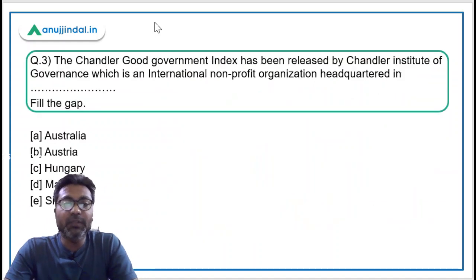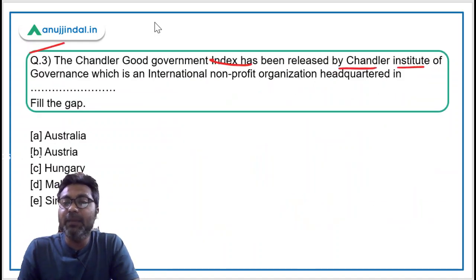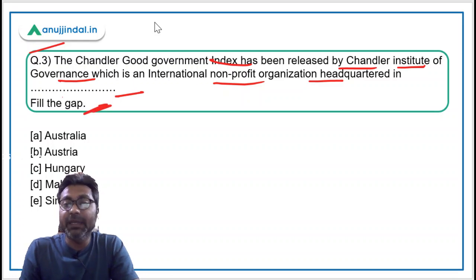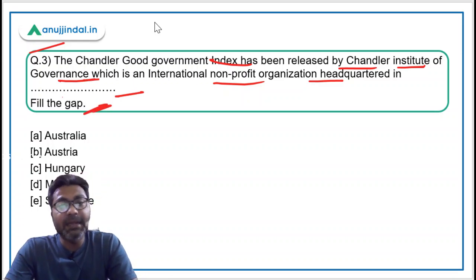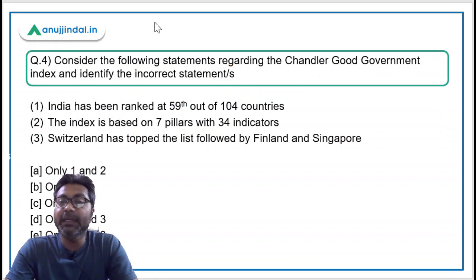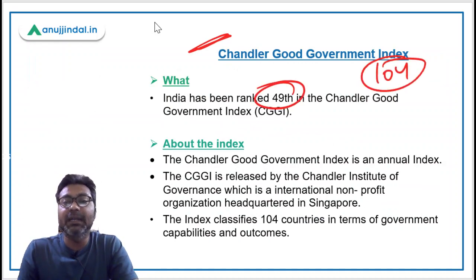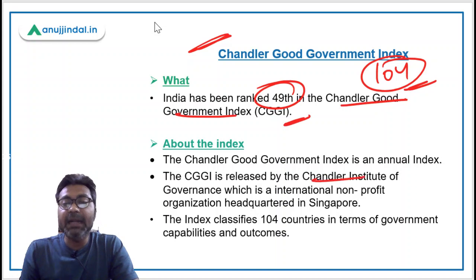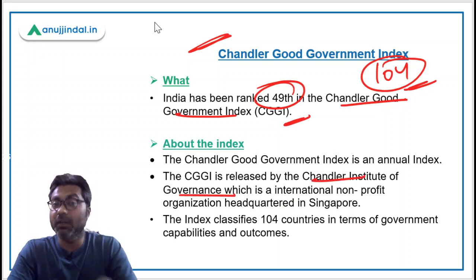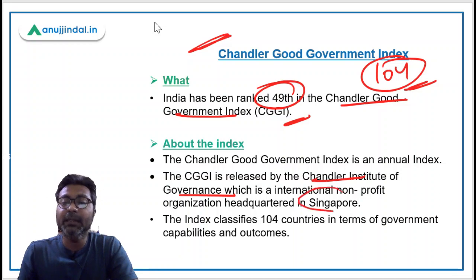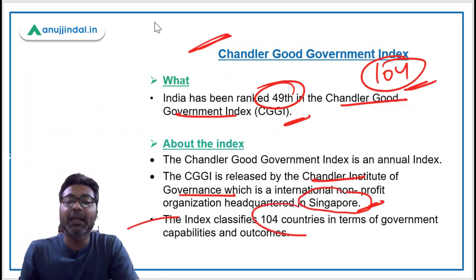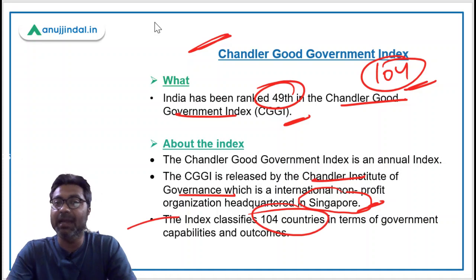Question 3: The Chandler Good Government Index has been released by the Chandler Institute of Governance, an international non-profit organization headquartered in — fill in the blank. Question 4 is also based on this index. India has been ranked at 49th place out of 104 countries in the Chandler Good Government Index, which is released annually by the Chandler Institute of Governance — an international non-profit organization based in Singapore.